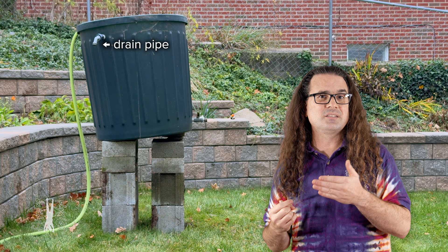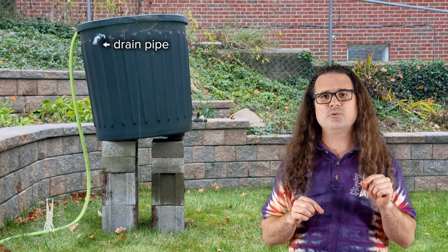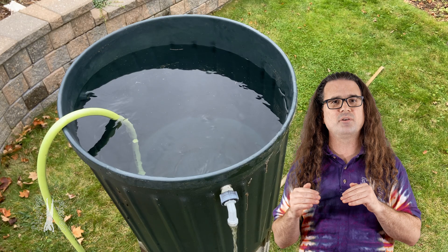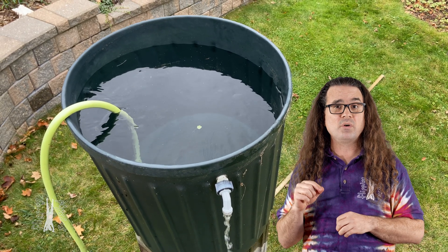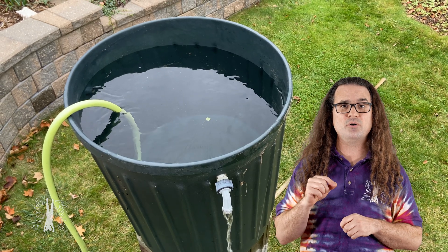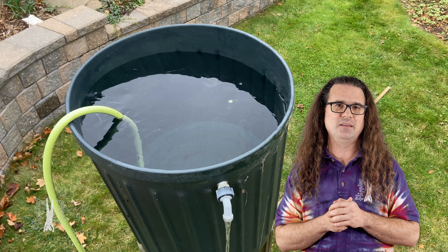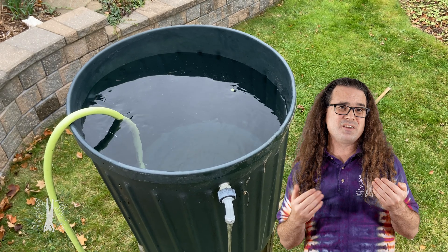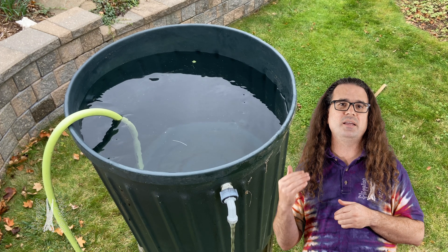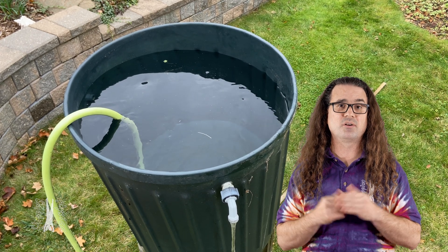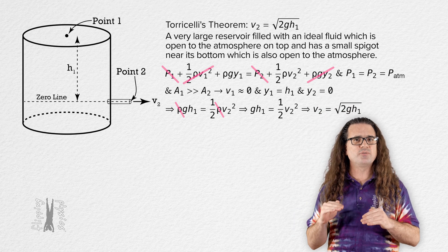There is also a drain pipe on the side of the rain barrel. When I turn on the water to the hose, the barrel will fill until water flows out of the drain pipe. At that point I will open the spigot. Water will flow into the rain barrel through the hose and flow out through the spigot and the drain pipe simultaneously. Because this reservoir is not actually very large, using the hose to add water keeps the height of the top of the water in the barrel constant. But before we do all that, let's take measurements and do the calculations.